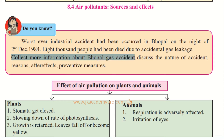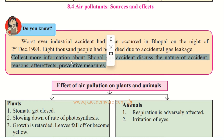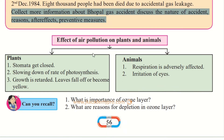Collect more information about the Bhopal gas accident and discuss the nature of the accident, its reasons, after-effects, and preventive measures — what happened to the people, the land, the air and water, and what measures were taken to control or lessen the effects.